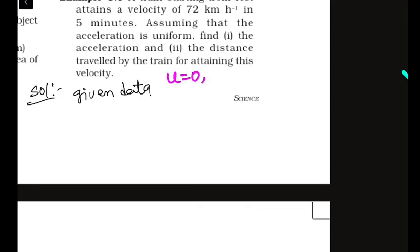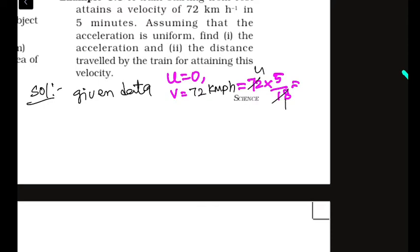Converting 72 km/h to m/s: 72 × 5/18 = 20 m/s. Time T = 5 minutes = 5 × 60 = 300 seconds. We need to find acceleration and total displacement.